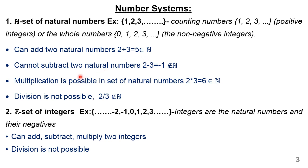But I cannot subtract two natural numbers, because if I have to subtract a higher value from a lower value, the result is going to be negative. So two minus three gives us minus one, which is not a member of the set of natural numbers.